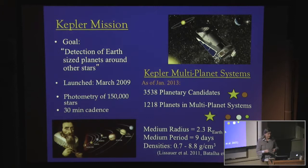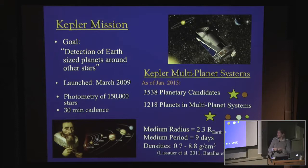This is on fairly short period orbits — the median period is about 10 days. This is only looking at the most inner parts of those systems, so they likely have even more companions. But even on that fairly short time period, they really like to have company — they're not loners.